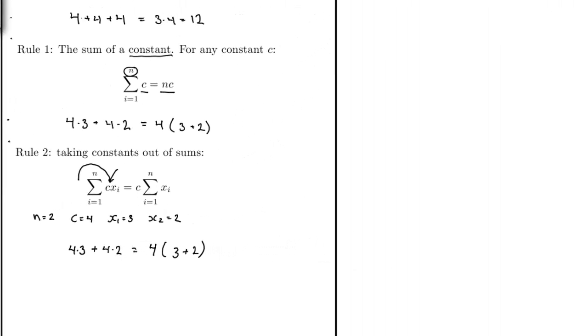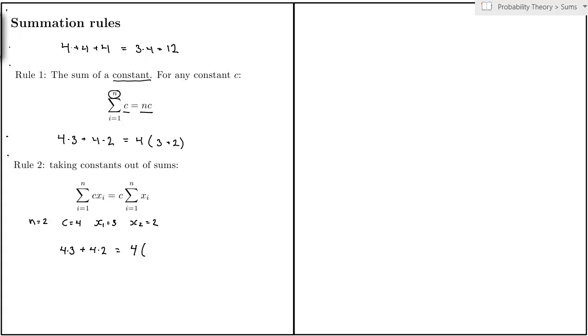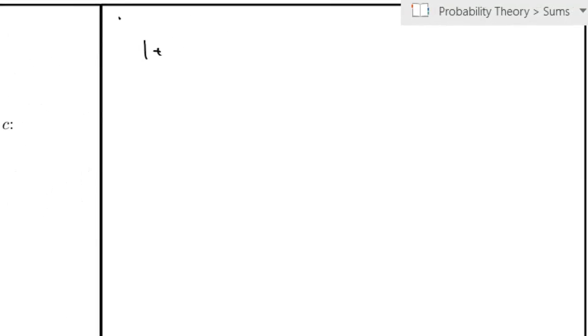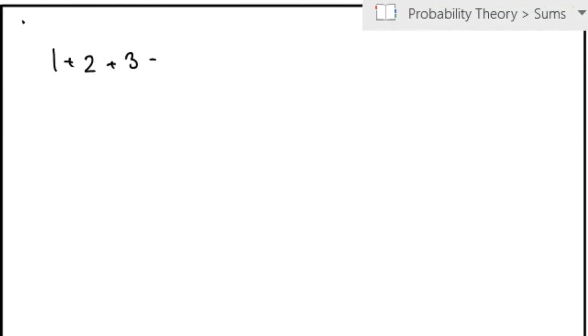For rule number 3, remember that we can sum numbers in any order we like. So if I want to do 1 plus 2 plus 3 plus 4, I can start by adding the first two numbers, that's 3, and to that I add the sum of the last two numbers, that's 7, and then I get 10.